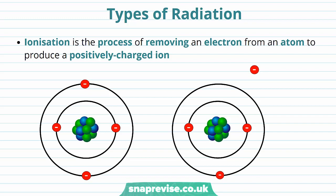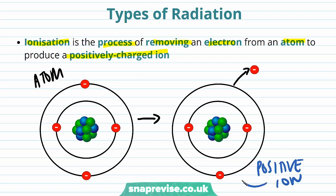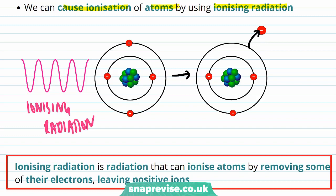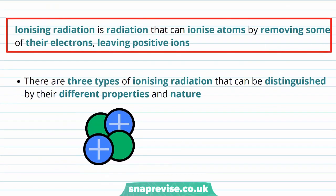We're going to discuss the three different types of ionising radiation. Ionisation is the process of removing an electron from an atom to produce a positively charged ion. If an electron is removed from the atom by the process of ionisation, it forms a positive ion. We can cause this ionisation of atoms by using ionising radiation, which will cause an electron to be removed from the atom and create a positive ion. Ionising radiation is radiation that can ionise atoms by removing some of their electrons, leaving positive ions.